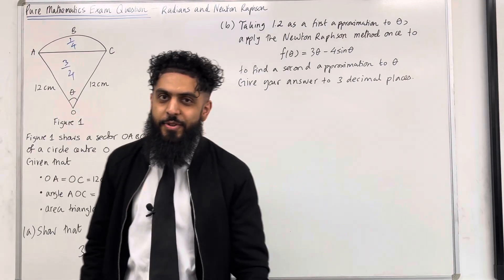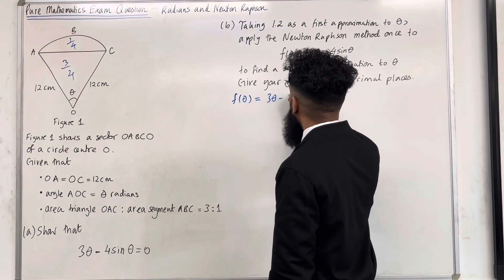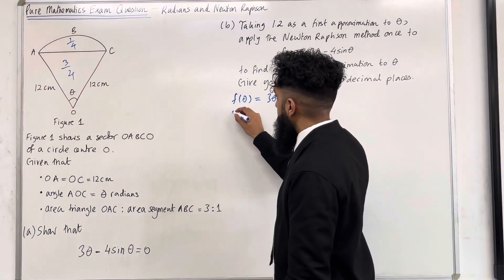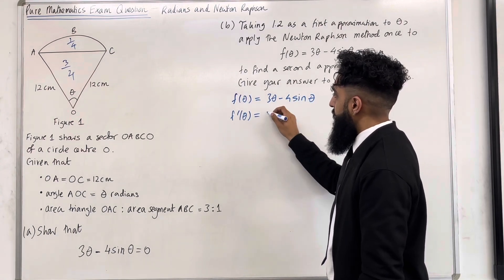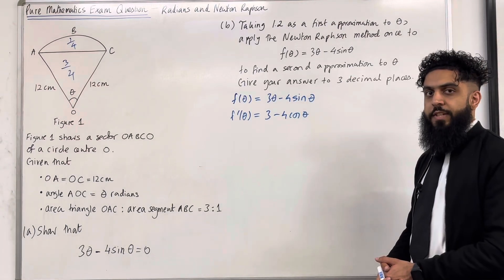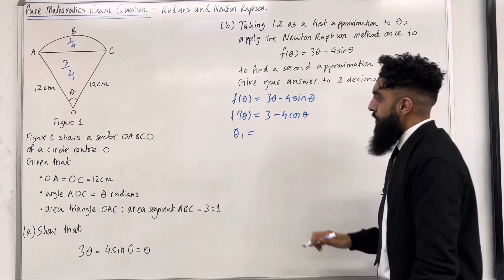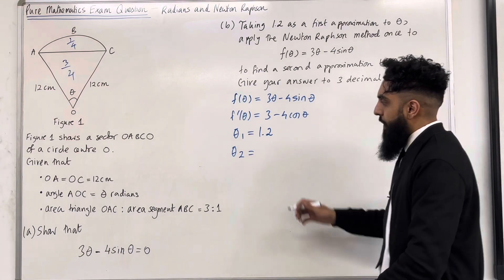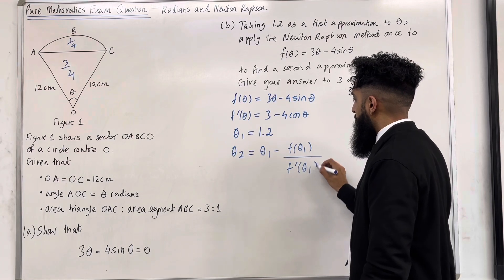Let's have a look at the solution to part B. I'm going to start off with f of theta equals 3 theta minus 4 sine theta. Now I'm going to differentiate f of theta to give me f dash of theta. F dash of theta equals the first term differentiates to 3 and the second term differentiates to minus 4 cos theta. Now theta 1 is my first approximation, so my first approximation is 1.2. My second approximation theta 2 using the Newton-Raphson method is given by theta 1 minus f of theta 1 divided by f dash of theta 1.